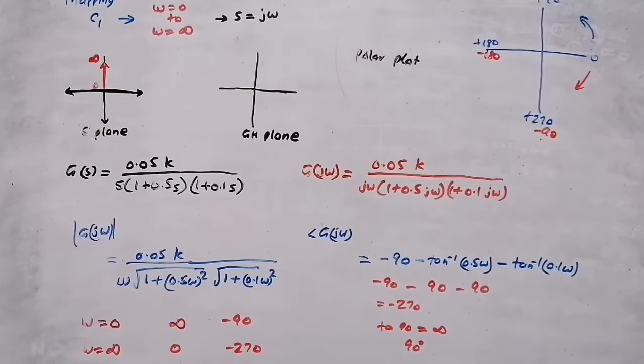Now drawing the plot on the GH plane: when omega = 0, the corresponding point is at infinity at angle -90° — so the plot starts from infinity on the negative imaginary axis. When omega = ∞, the corresponding point is at the origin, angle -270°, which is on the positive imaginary axis. So the plot goes from infinity to origin. I need to find the crossing point on the -180° real axis.